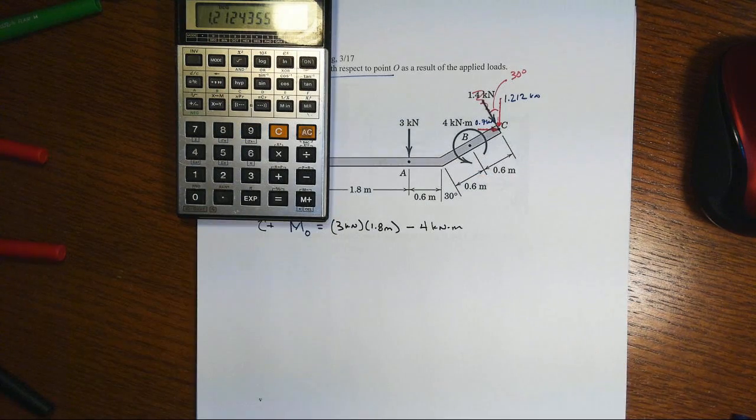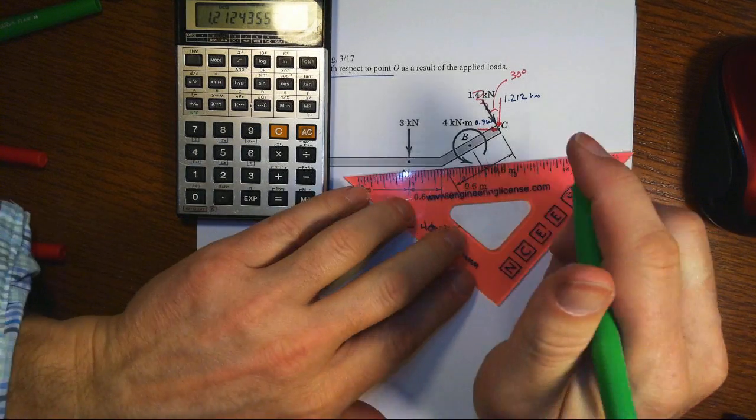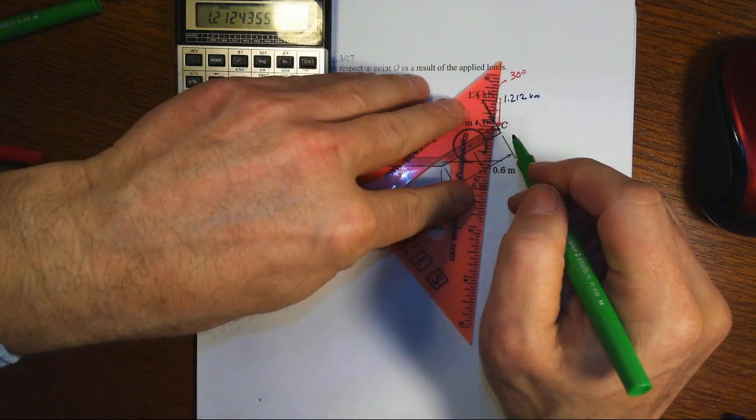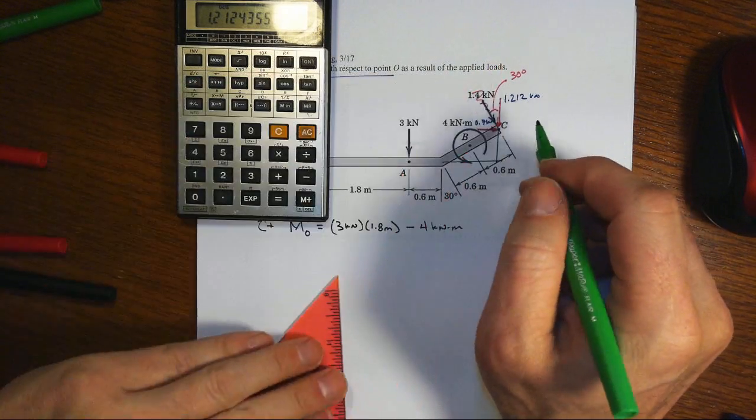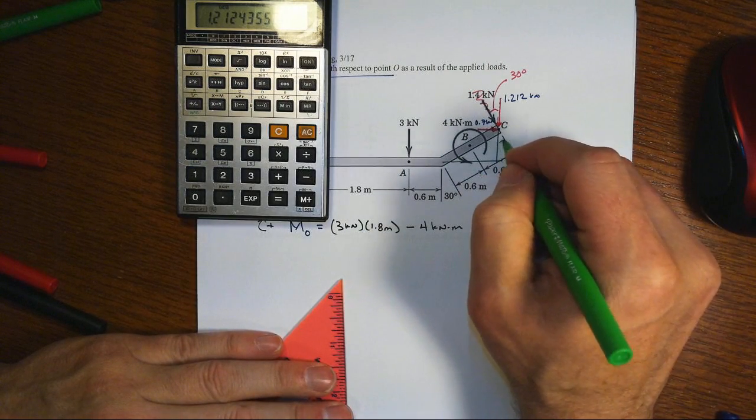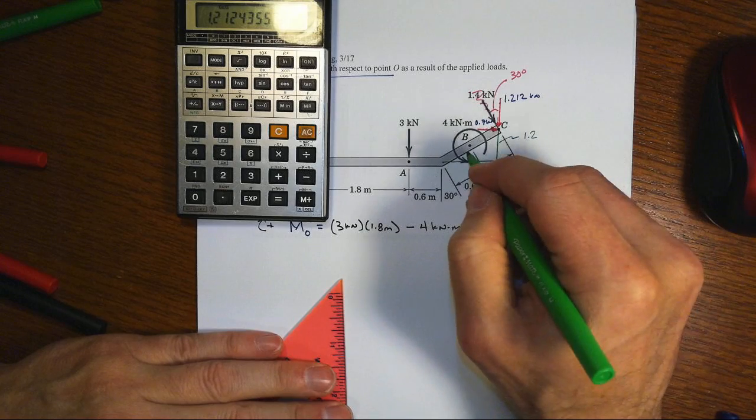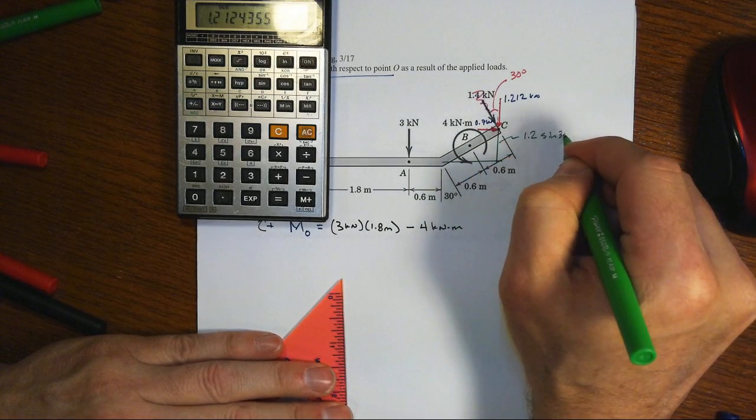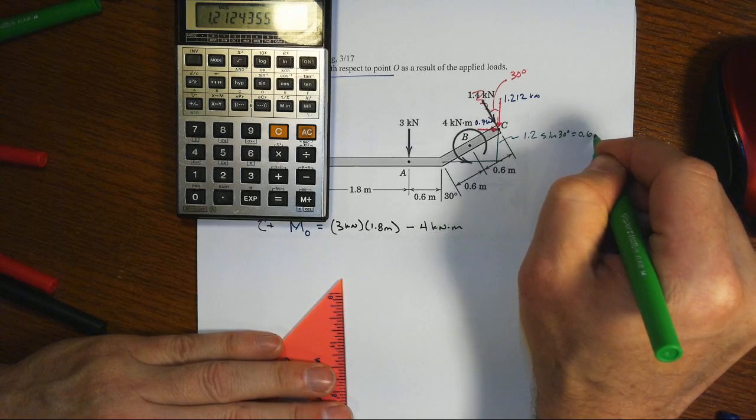We've got our extended X axis through here, and the hypotenuse is 1.2 meters, so this edge here will be 1.2 times sine of 30, which is 0.5, so that's going to be equal to 0.6 meters.